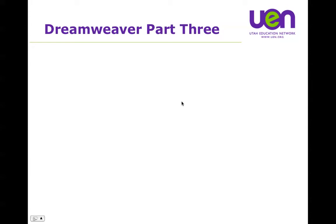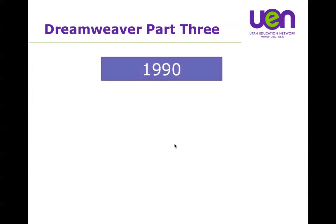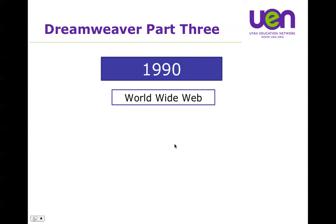Back in the day, around 1990, the internet had existed for a while, but it was about this time that the World Wide Web, or the web as we know it now, came about. Basically, that was when we started viewing websites and web pages using a browser. The internet's actual connections had been used for much longer to transfer files and communicate, but this is when it became accessible to more people.